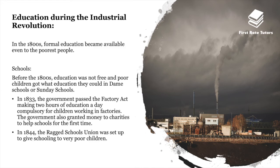Education experienced a massive shift during the Industrial Revolution. In the 1800s, formal education became available even to the poorest people. Before the 1800s, education wasn't free, and poor children got whatever education they could in Dame schools or Sunday schools. In 1833, the government passed the Factory Act, making two hours of education a day compulsory for children working in factories, and granted money to charities to help schools educate poorer children.